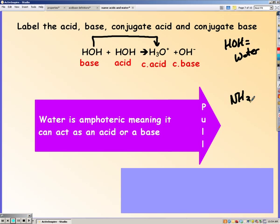Water is not the only substance that can be amphoteric. NH3 is another example. It could gain a hydrogen and become NH4+ or ammonium, or it could lose a hydrogen and become NH2- with a negative one charge.